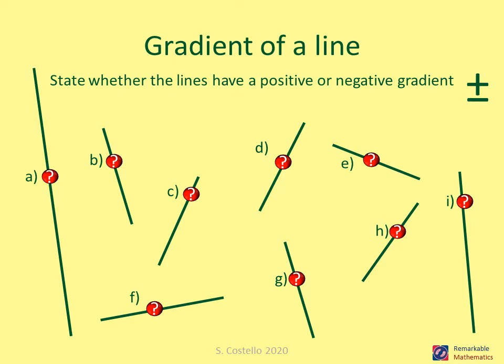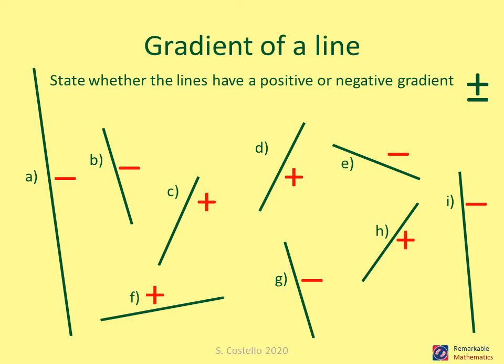Pause the video, go through the lines shown, and decide whether each has a positive or negative gradient. Once you've done that, restart the video. The answers: A is negative, B is negative, C is positive, D is positive, E is negative, F is positive, G is negative, H is positive, and I is negative.